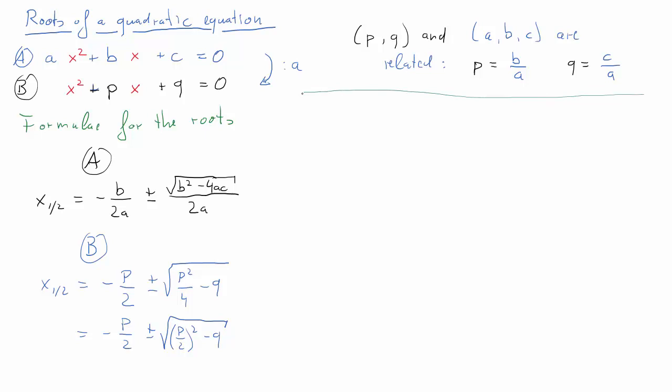So what we're going to do next is we're going to establish how the roots, the two roots, are related to each other. In particular, we want to show that x₁ plus x₂ is equal to minus b over a, and that x₁ times x₂ is equal to c over a.